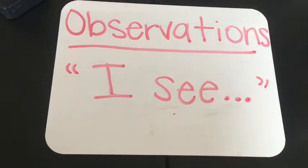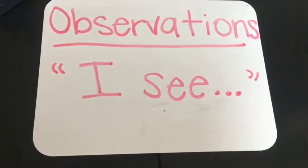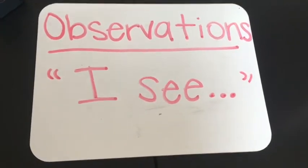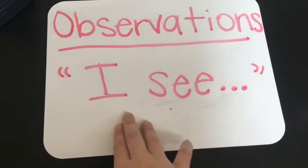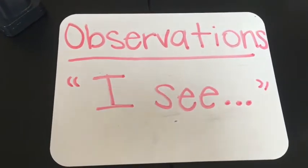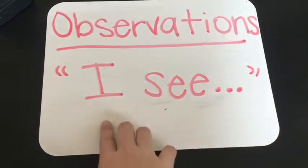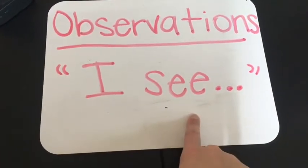So remember that observations are when we're using our five senses to get information about the world. We're going to start off with our observations with sentences like 'I see' or 'I hear,' 'I feel,' those sorts of things. And because we're using tools today, we're going to use 'I see' a lot.